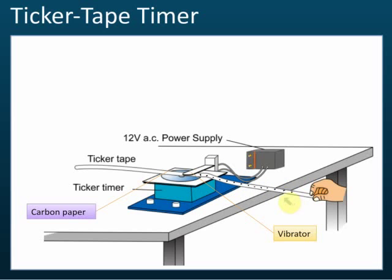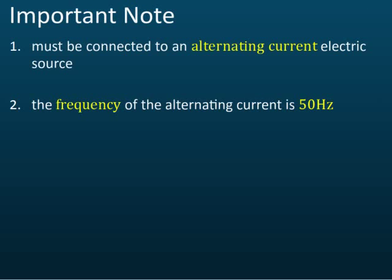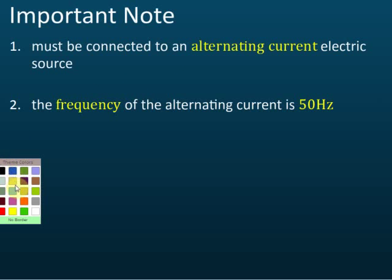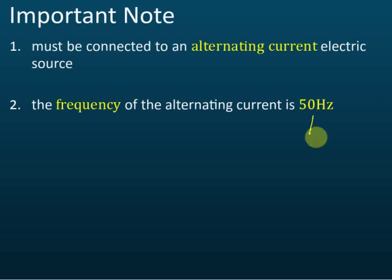There are a few things to know about the ticker tape timer. First, it must be connected to alternating current — if connected to direct current, it won't vibrate. This is a common exam question. Second, the frequency of the alternating current is 50 hertz, which means the ticker tape vibrates 50 times in one second.